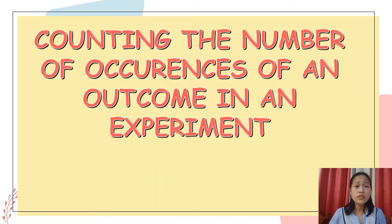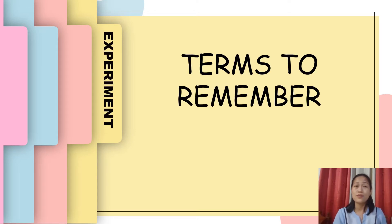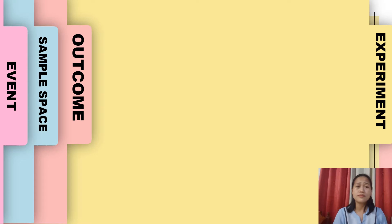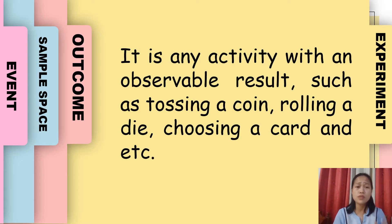Remember, class, that all the terms you encountered in our previous activity are very important in understanding the topic we're going to discuss today on counting the number of occurrences of an outcome in an experiment. Let's recall those terms. We have the experiment — it is any activity with an observable result such as tossing a coin, rolling a die, choosing a card, and many more.